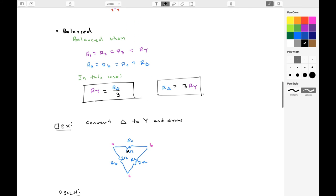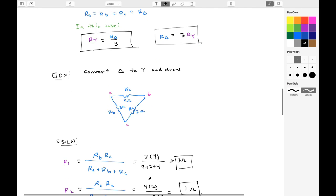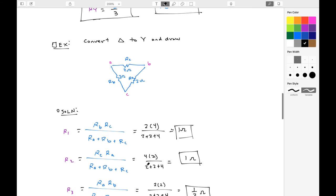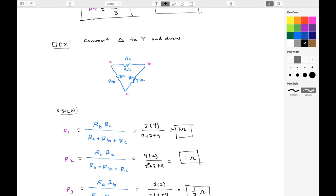So as an example, what we'll do is convert this delta to Y and then draw it at the end. You'll see all I'm going to do is apply those expressions up there. So R1 should be Rb, Rc over the sum of Ra plus Rb plus Rc, which should be 8 over 8, which is 1 ohm.